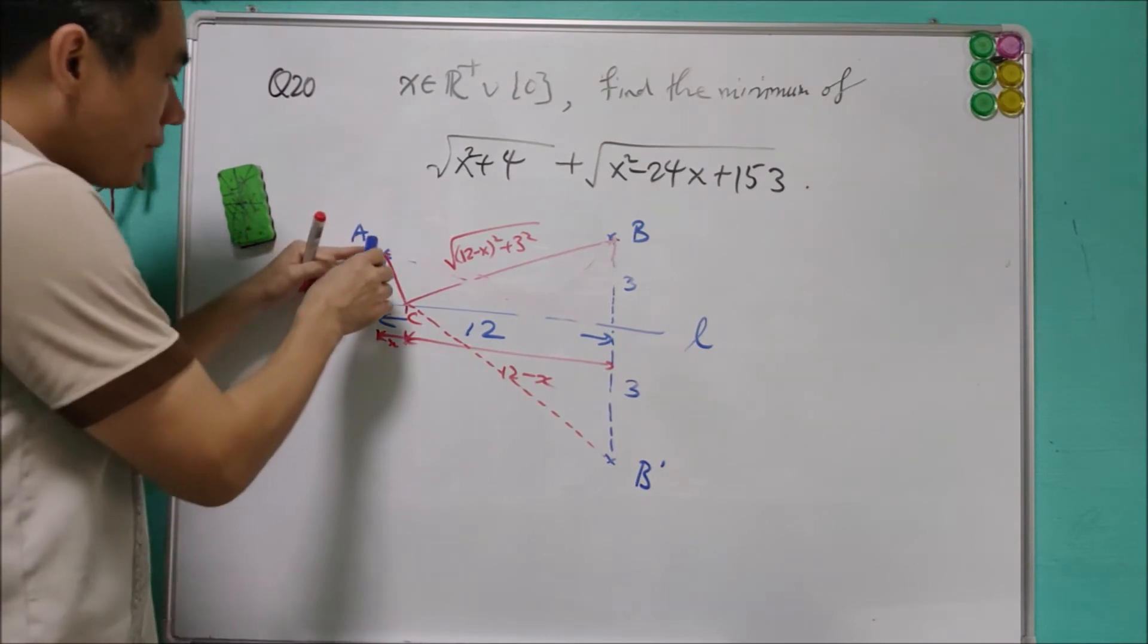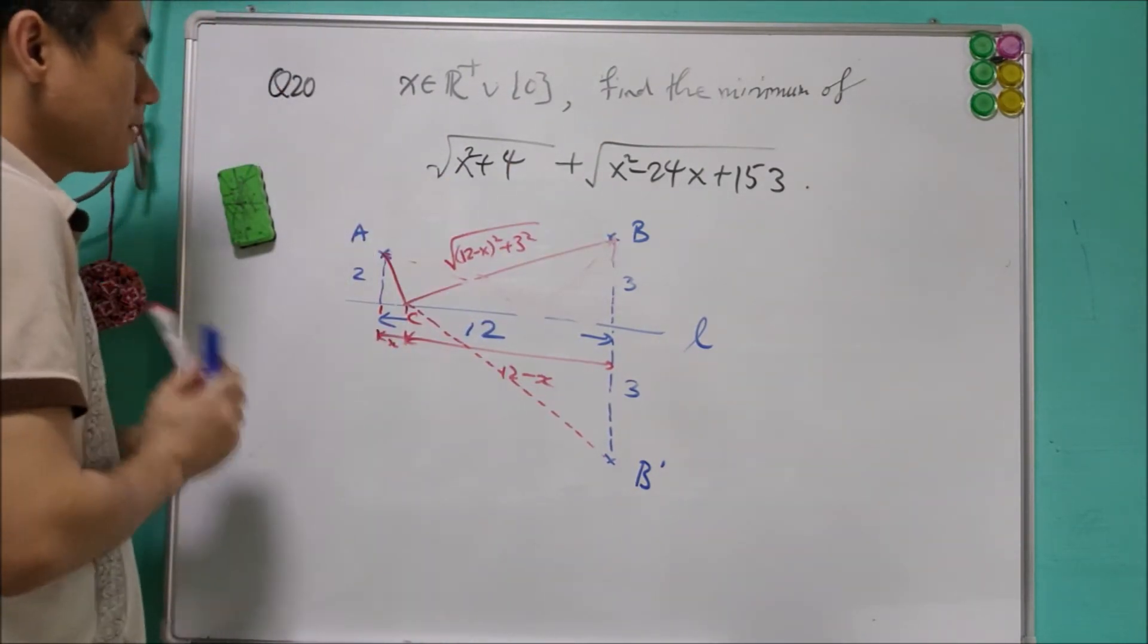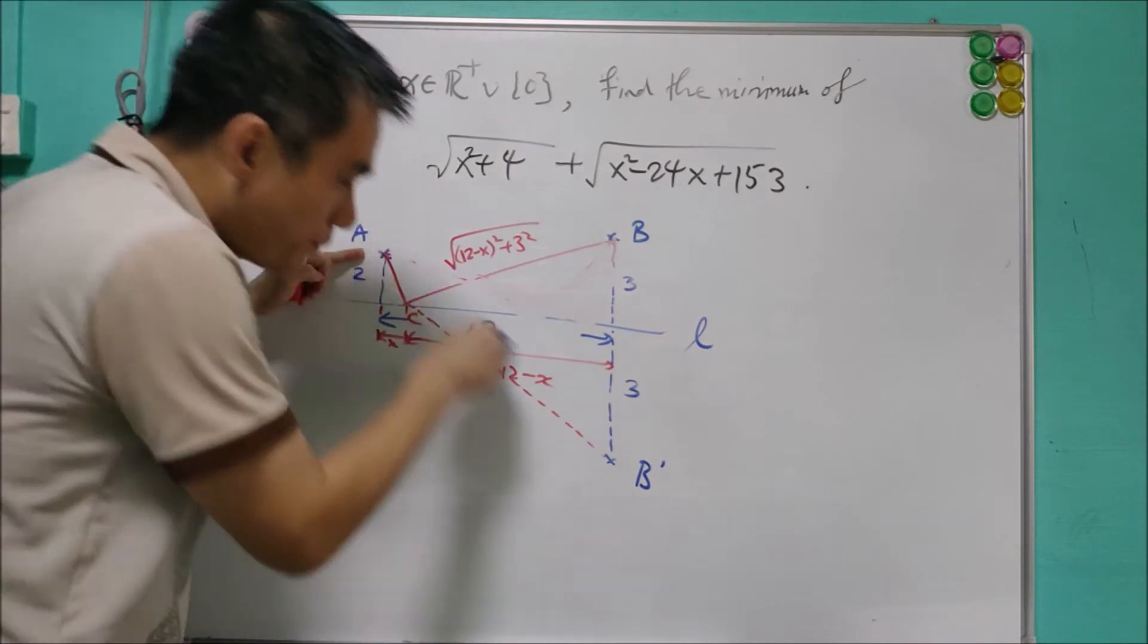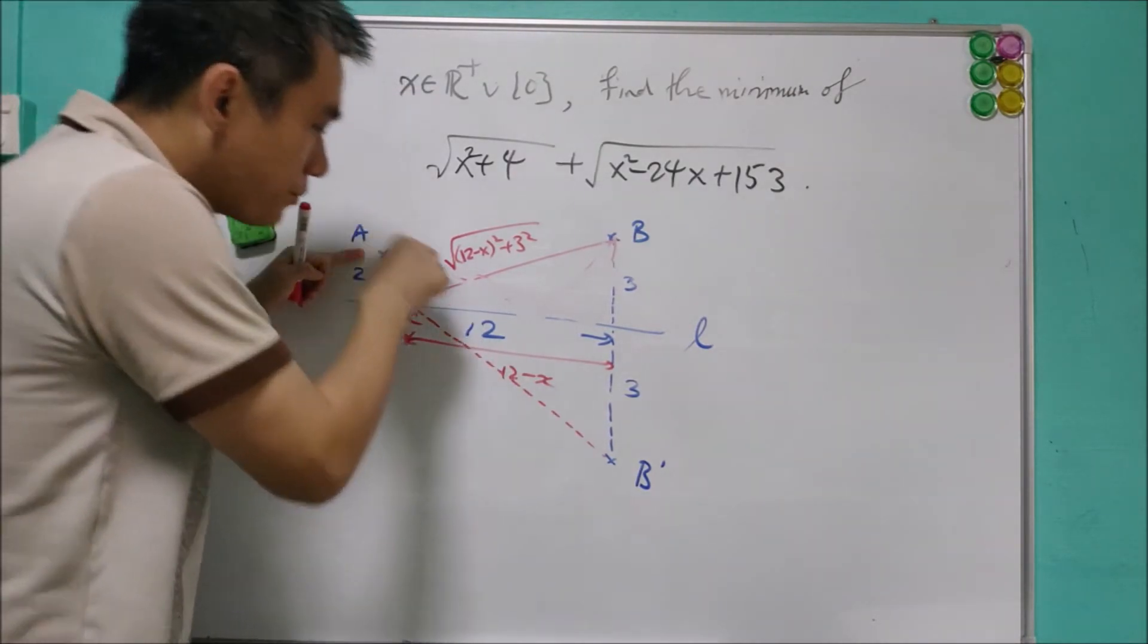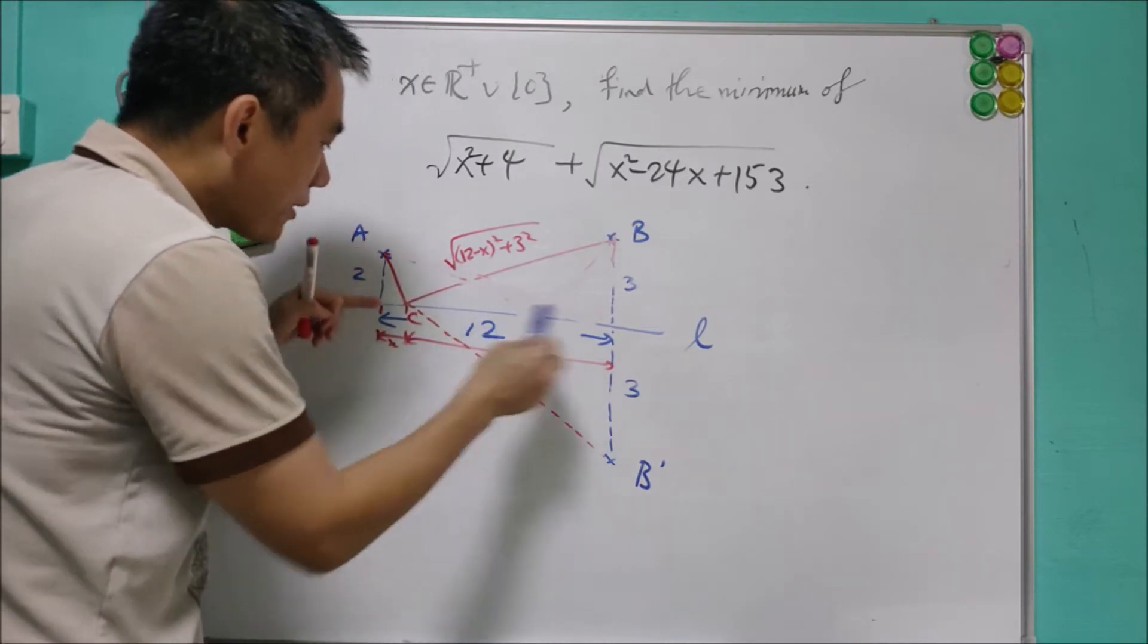With this in mind, instead of from A to C to B, I can just need to consider from A to B prime. Because from A to B prime, with a straight line, you will definitely pass through some point here.